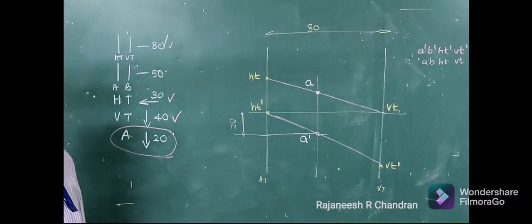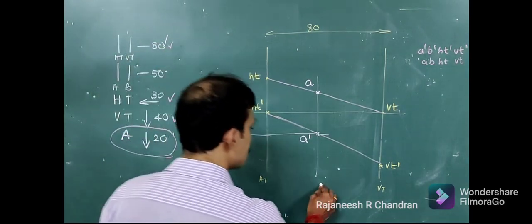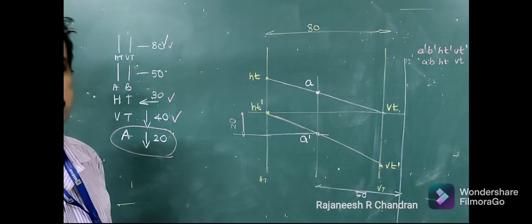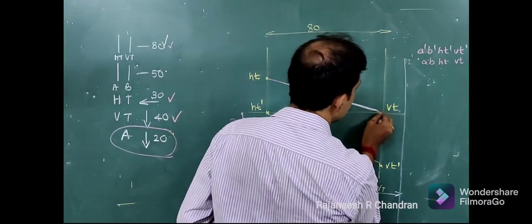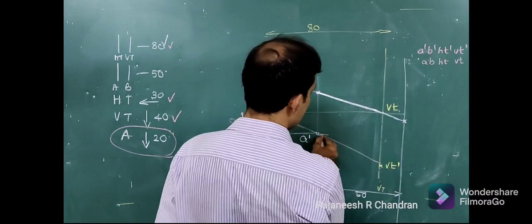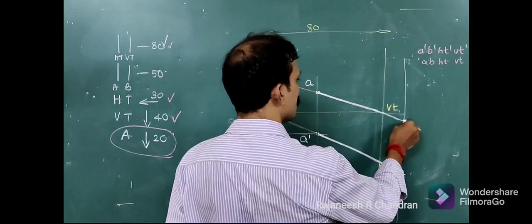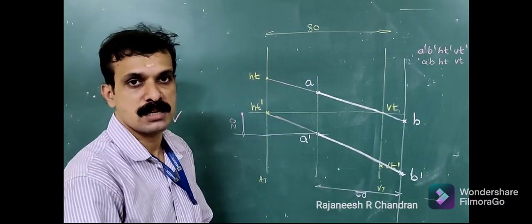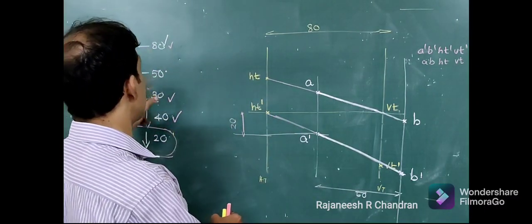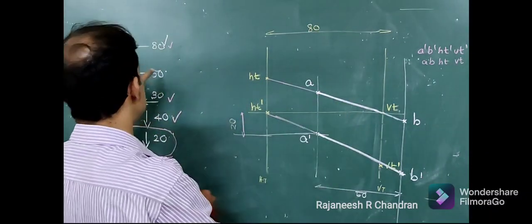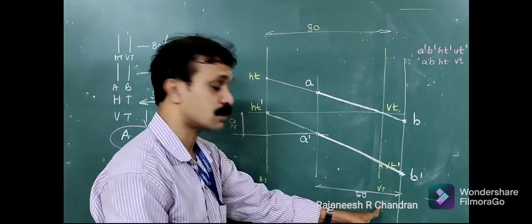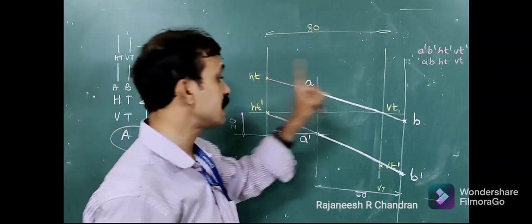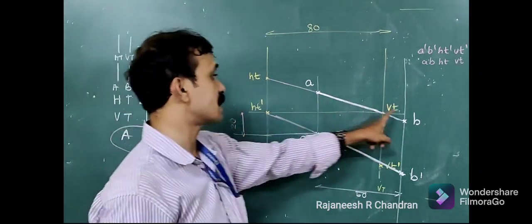Once we obtain the projector through A, it is given that the projector through the end points of AB is at a distance of 50. So at a distance of 50 from the projector through A, we can draw another line that will contain end points B' and B. Extending these lines, we get B and B'. The first step is to draw projectors through HT and VT at the given distances.